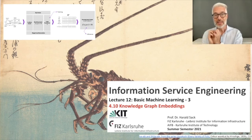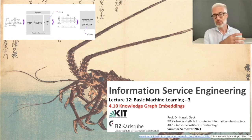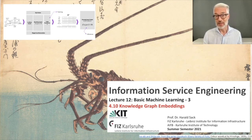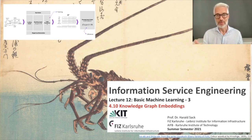By placing knowledge graph semantics into a vector space, we can perform quick computations of semantic similarity — much faster and simpler than working with a network graph, since it reduces to comparing two vectors. Other interesting tasks include link prediction and knowledge graph completion, where a model predicts a missing link in a triple — whether the missing element is the head, the relation, or the tail.